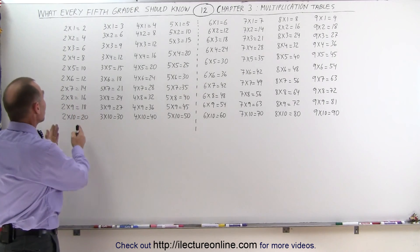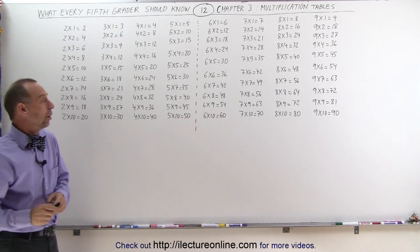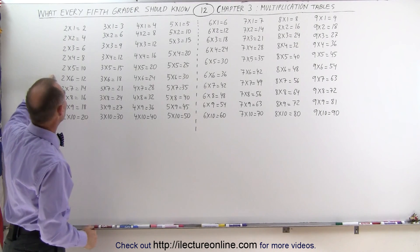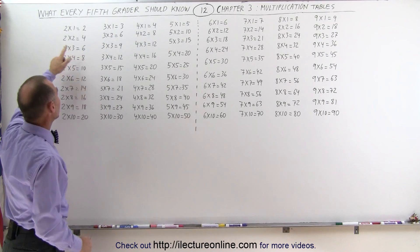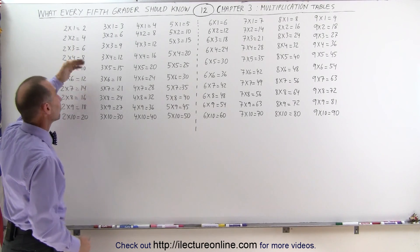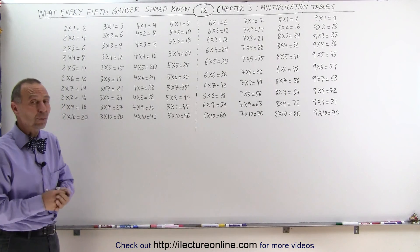When you start with the first few right here, multiplying times 2 and multiplying times 3, those are not that hard, because in the case of multiplying times 2, you simply add 2 to every answer. So 2 times 1 is 2, 2 times 2 is 4, 2 times 3 is 6, and so forth. The pattern is readily recognizable and easy to remember.